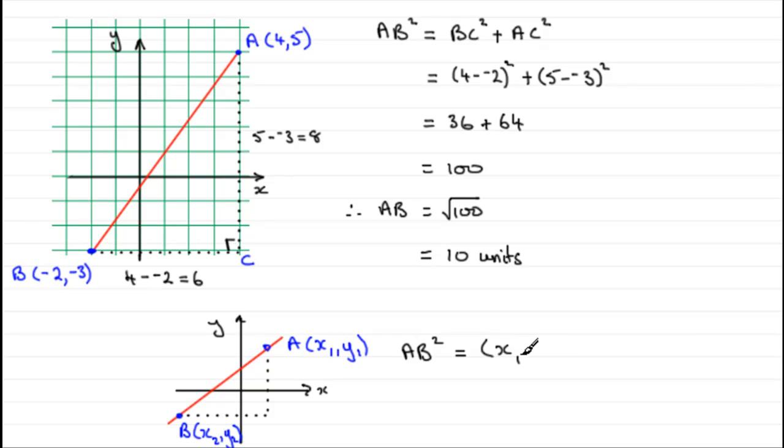Then to get AB, AB squared is equal to the sum of the squares of the lengths of the other two sides. So, in other words, the difference in the x-coordinates, x1 minus x2, or x2 minus x1, doesn't matter because we're going to square it, plus the difference in the y-coordinates. And again, I'm just going to say y1 minus y2 squared. But you could say y2 minus y1, doesn't make any difference.